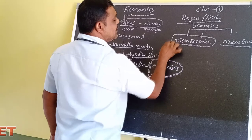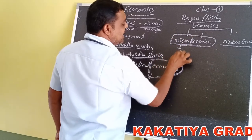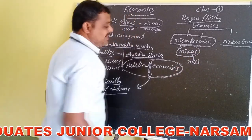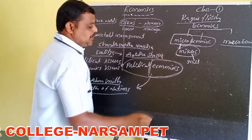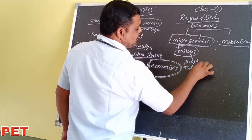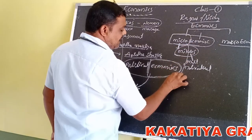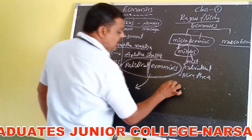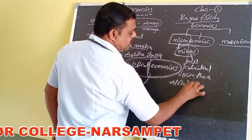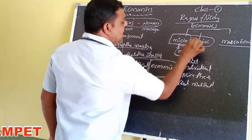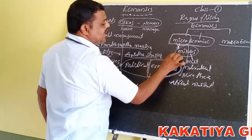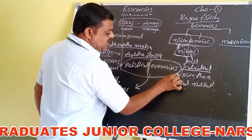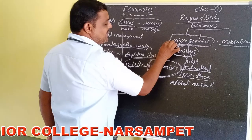Microeconomics is an English word. The prefix micro is derived from the Greek word mikros, which means small. Microeconomics is the study of individual economic units. Microeconomics is also called price theory, and it was developed by Alfred Marshall.